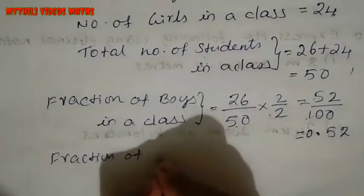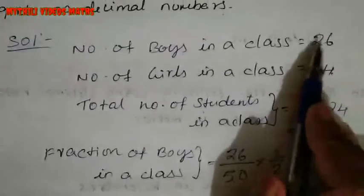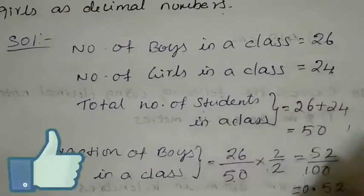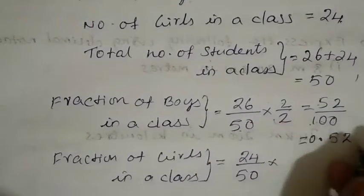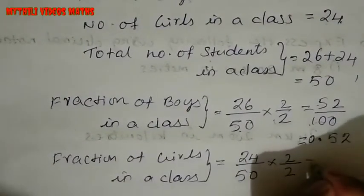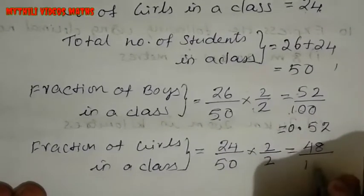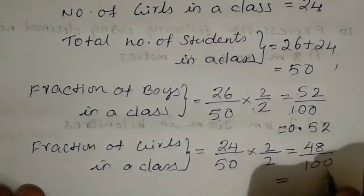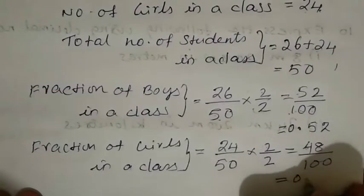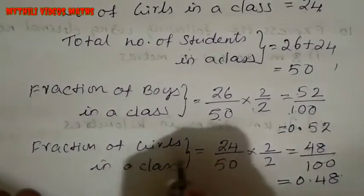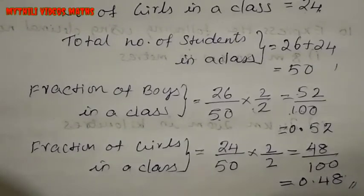Fraction of girls in class: 24 divided by total (50). Convert to denominator 100 by multiplying by 2: 2 fours are 8, 2 twos are 4, so 48 divided by 100 — that is 0.48. So the decimal fraction of girls is 0.48. That's the answer for sum 7. Next video — if you have doubts, comment below, subscribe, like and share. Thank you.